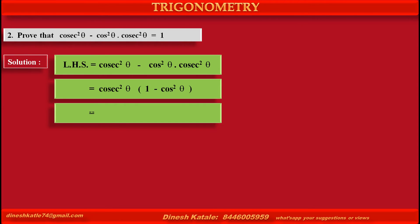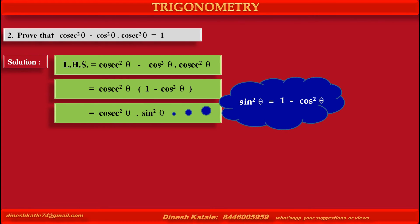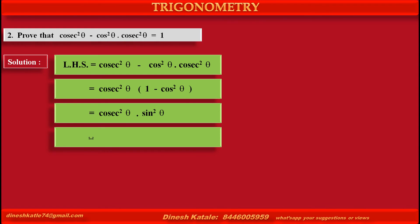cosec²θ equals cosec²θ into (1 − cos²θ), which becomes cosec²θ into sin²θ. cosec²θ and sin²θ are reciprocals of each other, so their product is 1, which is equal to the right-hand side.